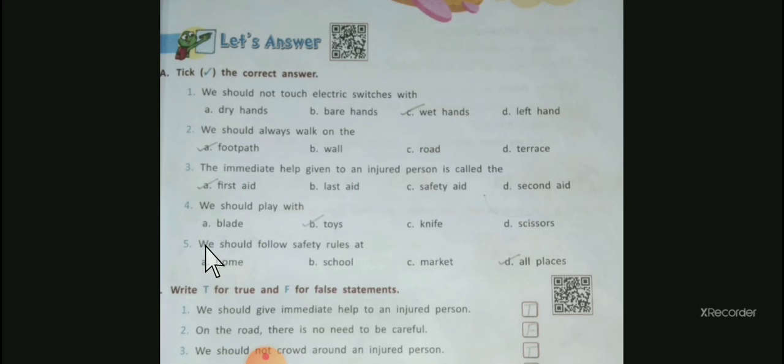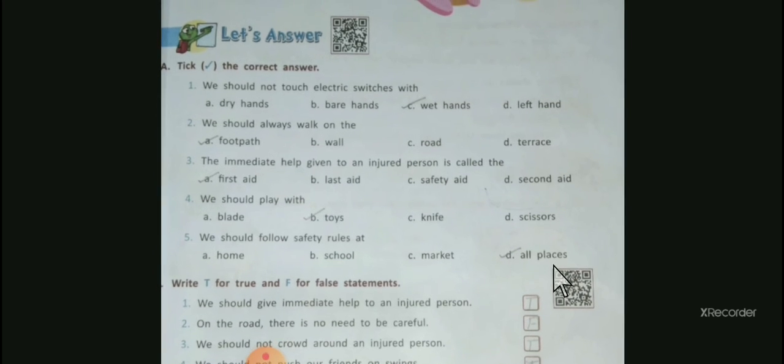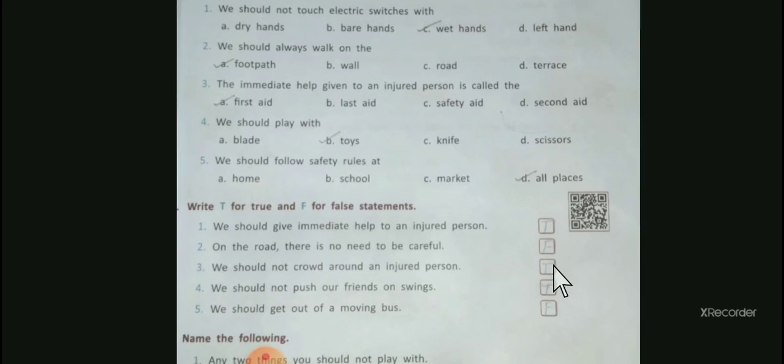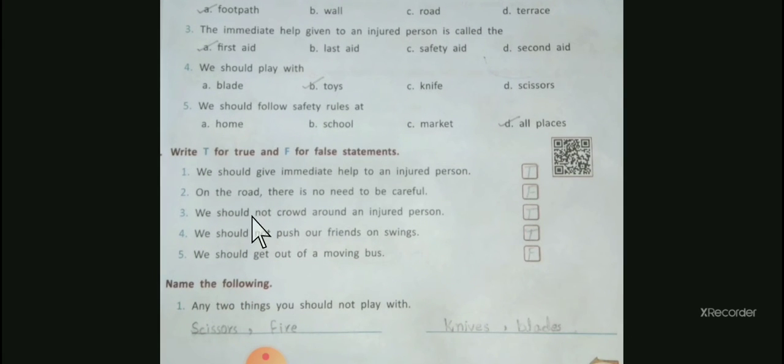Number five: We should follow safety rules at home, school, market, or all places. The correct answer is all places. It means we should always follow the safety rules at all places. Section B: Write T for true and F for false statements.